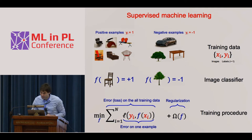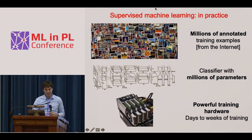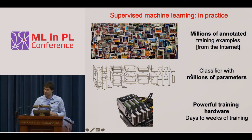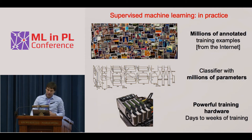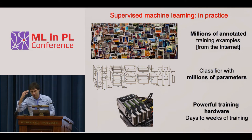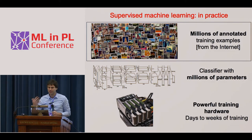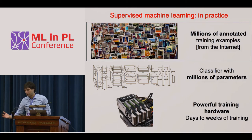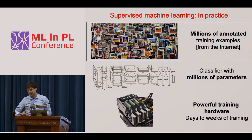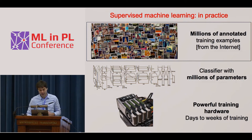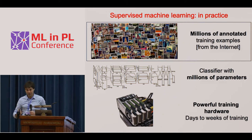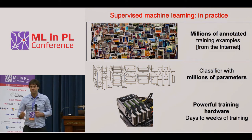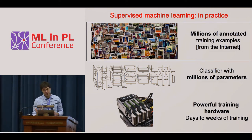In practice, you require millions of training examples, a classifier with millions of parameters, and powerful training hardware. This procedure is very powerful — it's powering the current success of machine learning. It's called supervised machine learning: you gather training data for your problem and train a classifier to solve it.